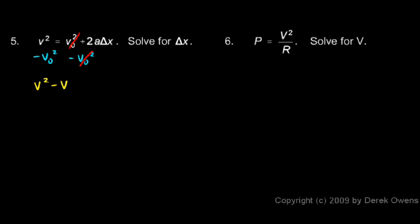On the left, I have v squared minus v0 squared, and on the right, I have 2a delta x. Then to solve for delta x, I need to divide each side by 2a. And on the right, the 2s and the a's cancel out, and I'm left with delta x all by itself, which is what I wanted. So delta x is v squared minus v0 squared over 2a.